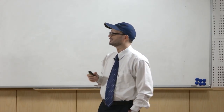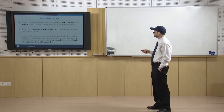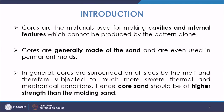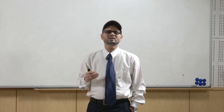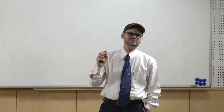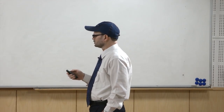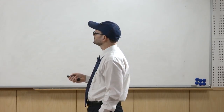Normally cores are made of sand, and there is a separate section for core making. We can also use permanent molding materials like metals and alloys, but since the collapsibility of these cores is not there, permanent mold materials are restricted in their shapes, so we use sand.